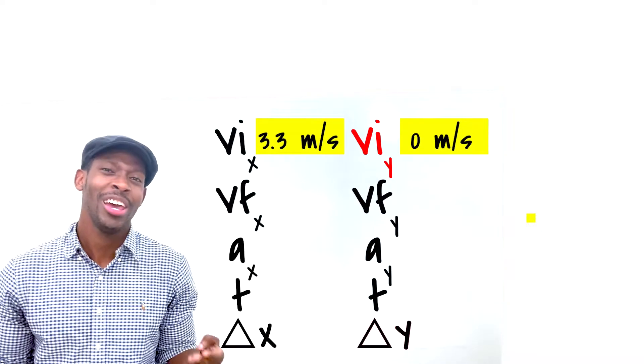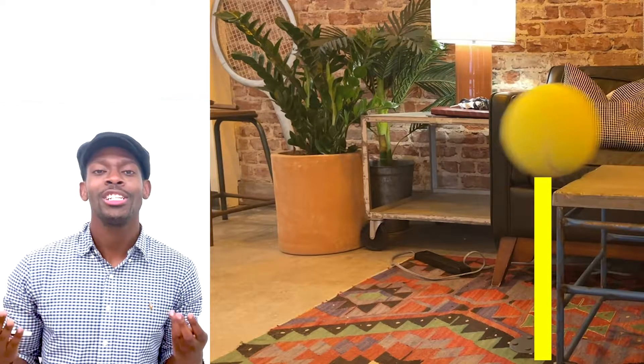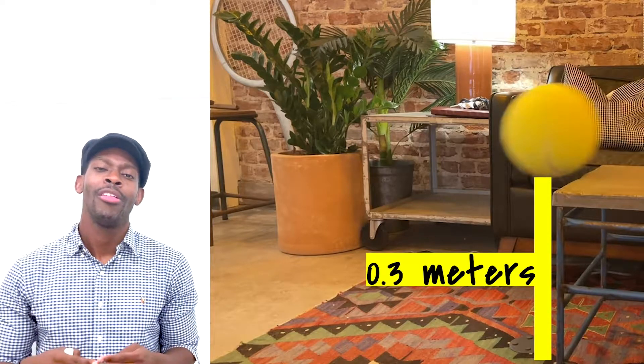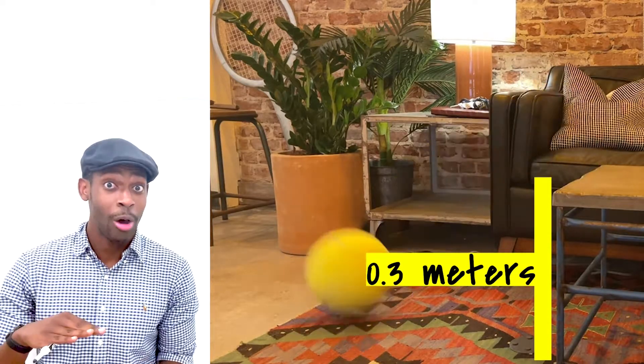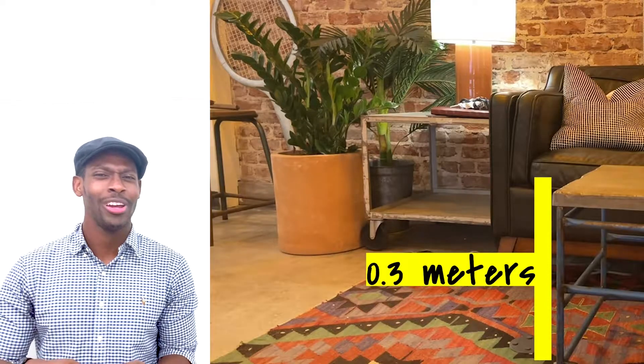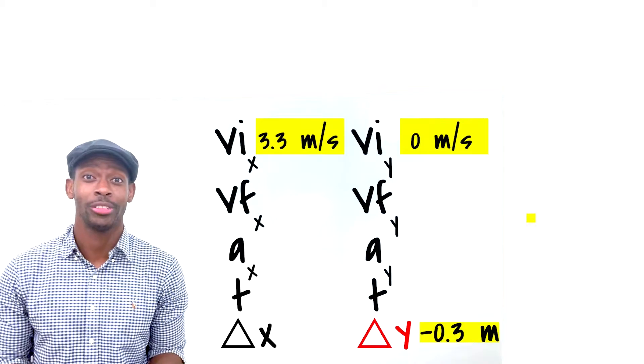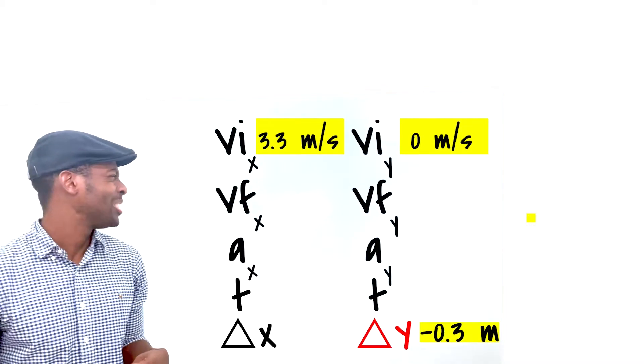Let's see what else I can figure out. I can get a meter stick and measure how high up the ball is from the ground. It's 0.3 meters high. But think about it. This ball is going to fall downwards. So therefore, its displacement on the y-axis will be negative 0.3 meters.